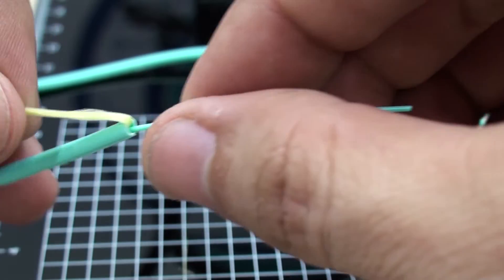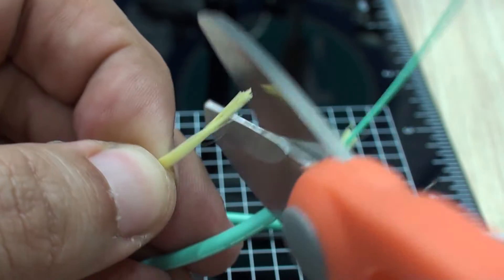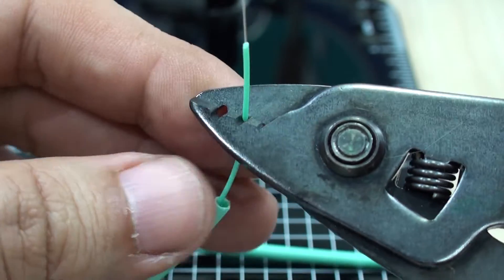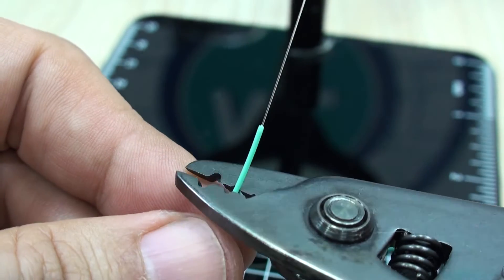You will then see the Kevlar fibers exposed which you will cut with the included Kevlar scissors. This way the buffer will be exposed. You will then use the second step of the stripper to get rid of this layer. Particularly in this part it's important to do it in steps of about half an inch.